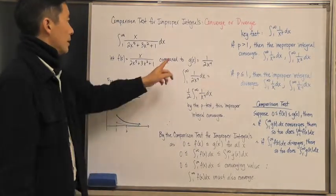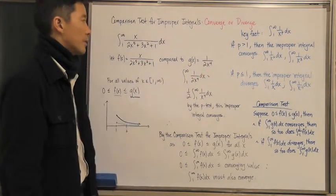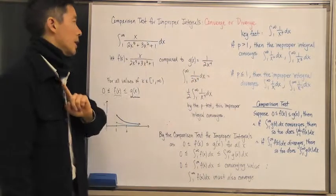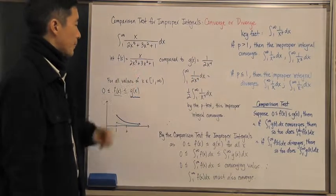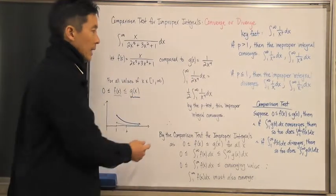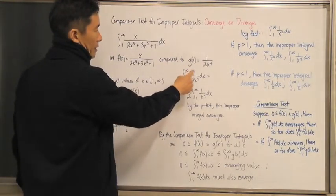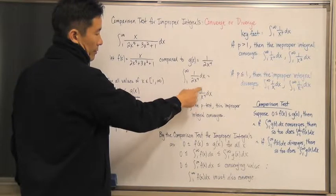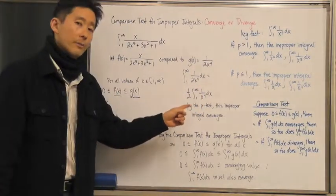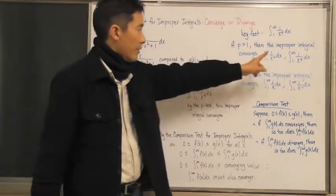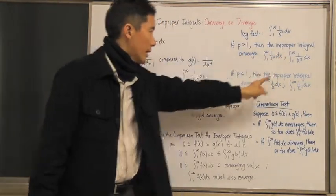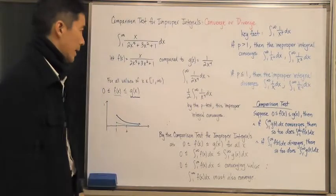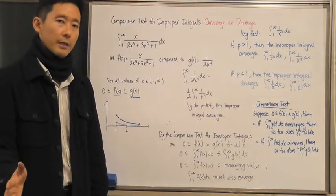I'm going to call that simpler function g(x). It's much simpler, which is why we compare to it. Analyzing g(x): the integral from 1 to infinity of 1 over 2x⁴ dx. Factoring out one-half gives the integral from 1 to infinity of 1/x⁴ dx. I don't need to go further because p = 4 is greater than 1, so this improper integral converges. I just need to know that it converges, not what it converges to.